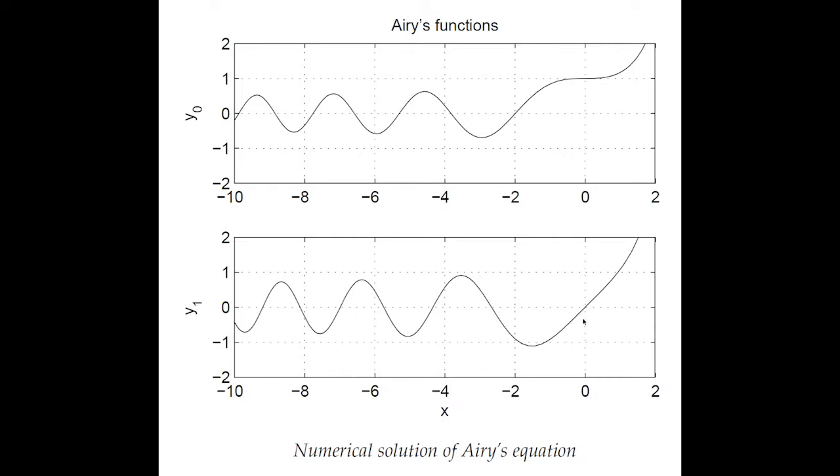The most compelling feature of these graphs is that they're oscillatory for negative x and growing exponentially for positive x. Let's go back and look at the equation and see why that's the case.